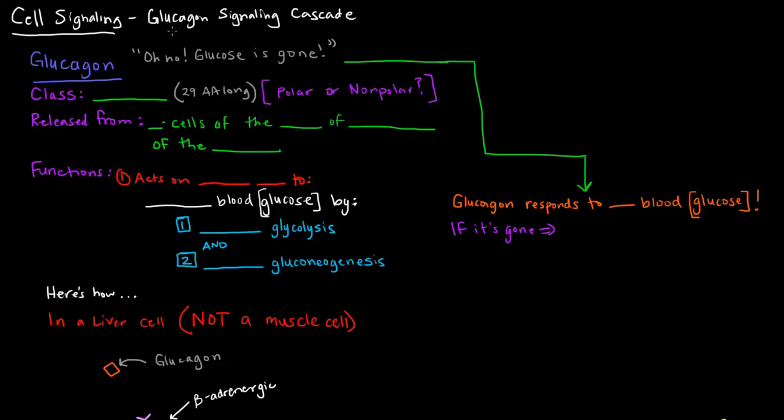In this video I want to talk about glucagon signaling cascade. So glucagon is a hormone that is of a particular class - that particular class is peptide or polypeptide. It's about 29 amino acids long, and if you recall, polypeptide or peptide hormones are categorized as polar hormones, so they'll be acting via systems in which they would attach or bind to receptors that are on the cell surface.